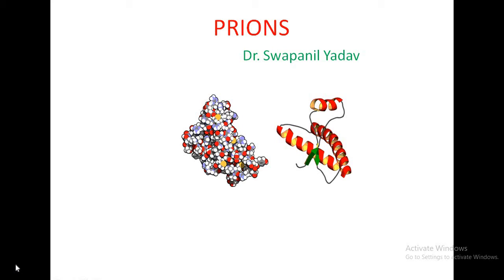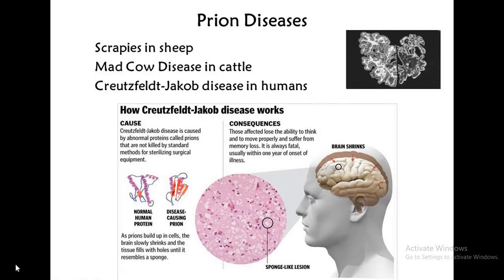Prions cause a variety of neurodegenerative diseases in both humans and animals. The well-studied prion is the scrapie prion, which causes scrapie disease in sheep. Affected animals lose coordination of their movements, tend to scrape, rub their skin, and eventually cannot walk.